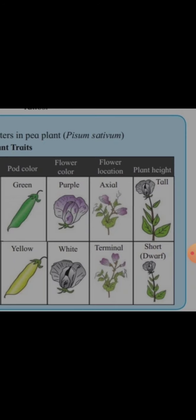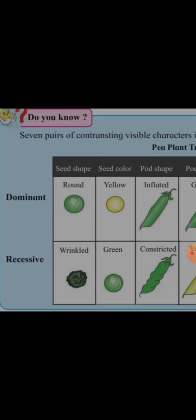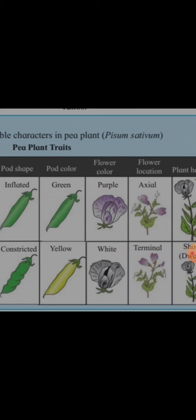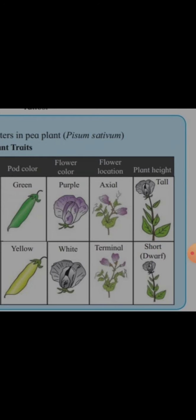The seven characters are: seed shape, seed color, pod shape, pod color, flower color, flower location, and plant height. For seed shape, round is dominant and wrinkled is recessive. Seed color: yellow is dominant and green is recessive. Pod shape: inflated is dominant and constricted is recessive. Pod color: green is dominant and yellow is recessive. Flower color: purple is dominant and white is recessive. Flower position: axial is dominant and terminal is recessive. Plant height: tall is dominant and short or dwarf is recessive.